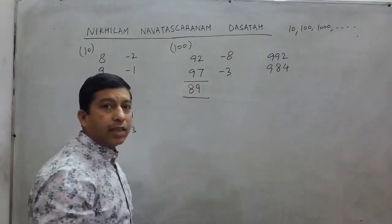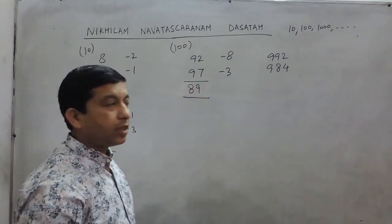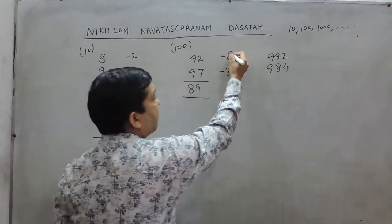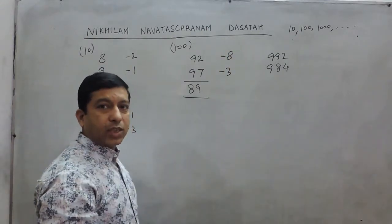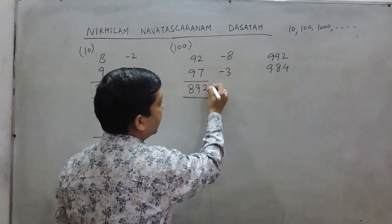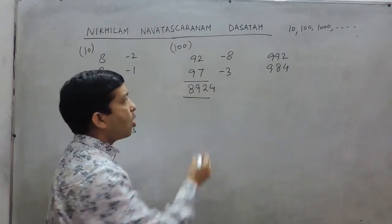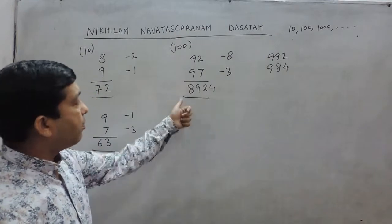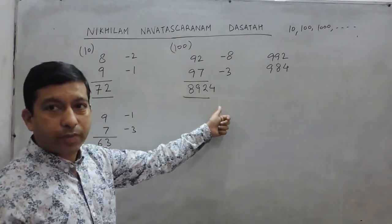These 89 are the first two digits of the answer at the 100s place. If we multiply 8 and 3, it is 24. These are the last two digits. So 92 multiplied by 97 becomes 8924.